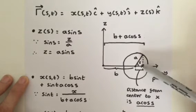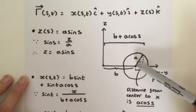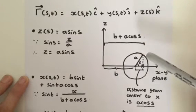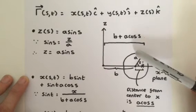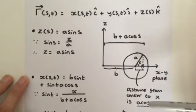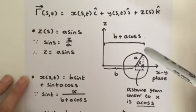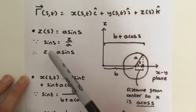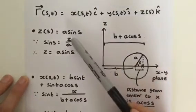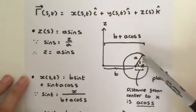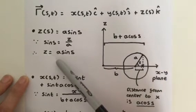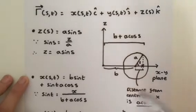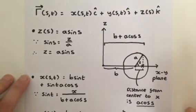Z will be negative down here and as S goes from 0 to 2 pi radians Z will go from 0 to its maximum point. So using basic trigonometry you can say that the sine of S is equal to Z divided by A, and therefore Z is equal to A sine S. That's all there is for our Z component.